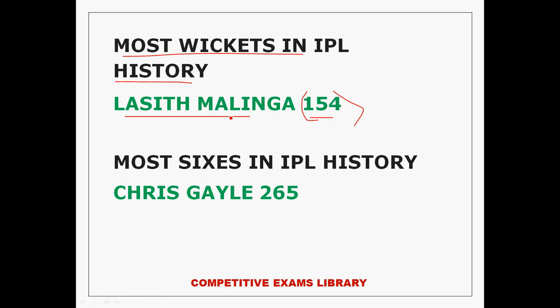Most sixes in IPL history is Chris Gayle, with a total of 265 sixes. Chris Gayle is a Royal Challengers Bangalore player and is considered the most dangerous batsman in the world.